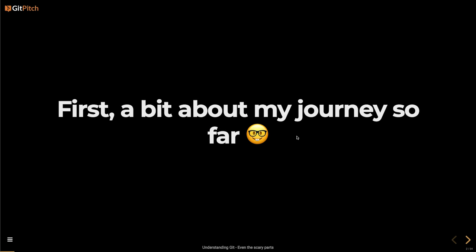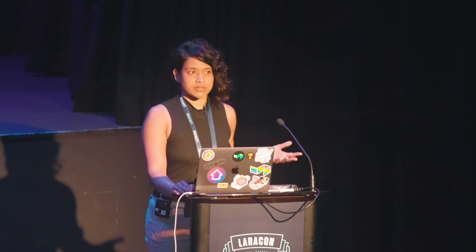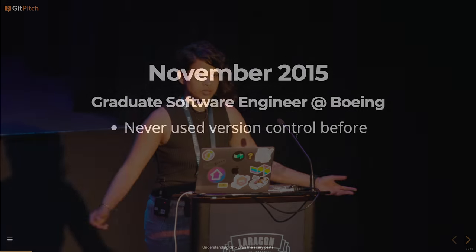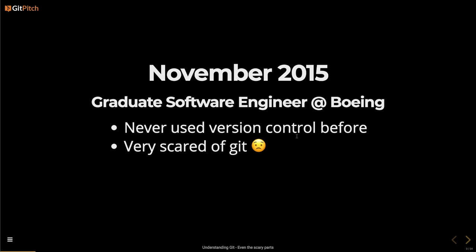A little bit about my journey so far in software. I didn't actually do a software degree, and not that Git is covered very much in uni anyway, but a lot of it was learning through the jobs that I had. In 2015, I was a graduate software engineer at Boeing, and I had never really used version control before. I knew of GitHub, I kept my code there, but I didn't really use it for the purposes of collaboration before that. So this was the first time I actually did that. I was very scared of it.